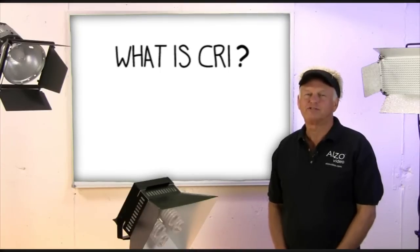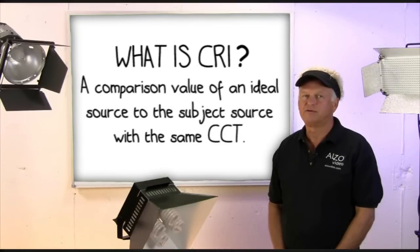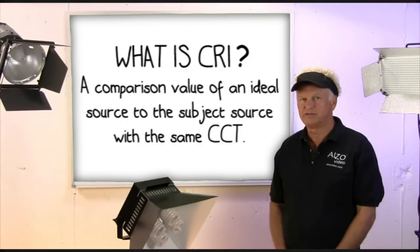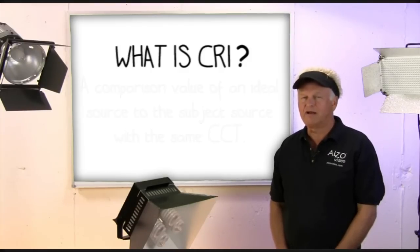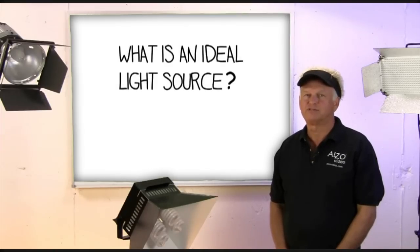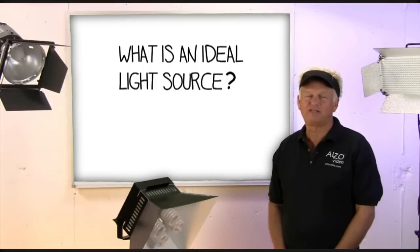First, CRI is a comparison value of an ideal reference source to the subject source with the same CCT color temperature. The first problem we have with CRI is what is an ideal light source? Or does such a thing even exist?